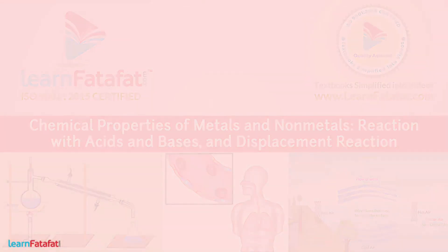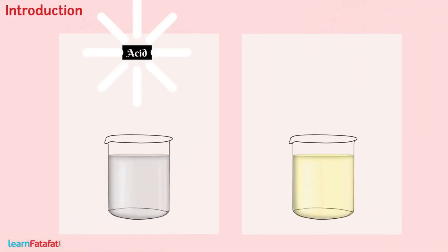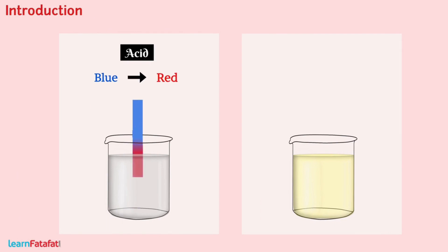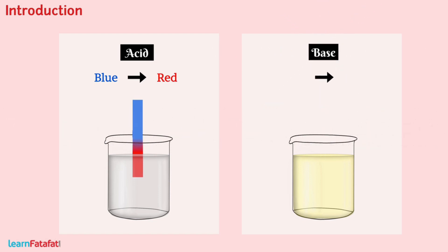Dear students, acids are substances which turn blue litmus paper into red, and bases are the substances that turn red litmus paper into blue.